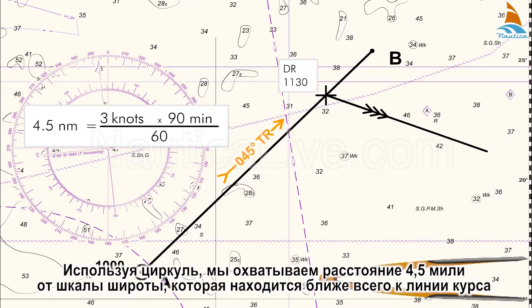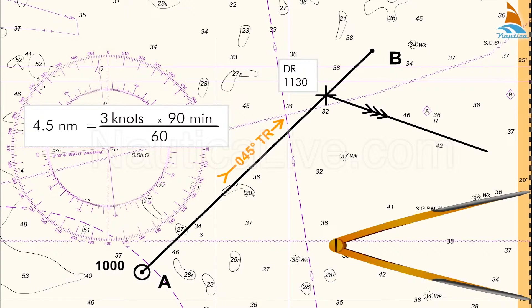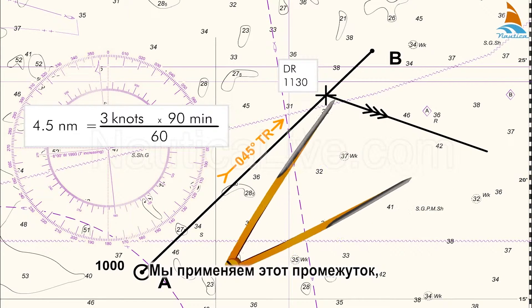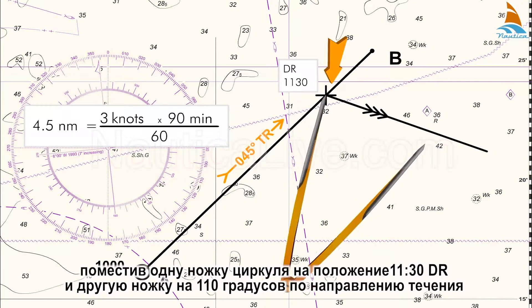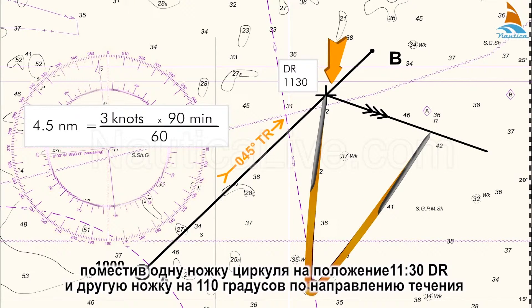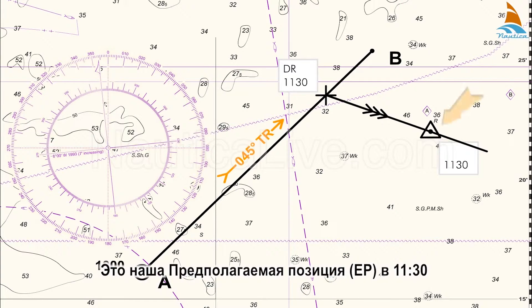Using the dividers, we span a distance of 4.5 miles on the latitude scale, which is closest to the course line and runs along the sides of the chart. We apply this span by placing one leg of the dividers on the 1130 DR position and the other leg on the 110 degree tidal set, marking the new position with a triangle and recording the time as 1130. This is our 1130 Estimated Position, EP.